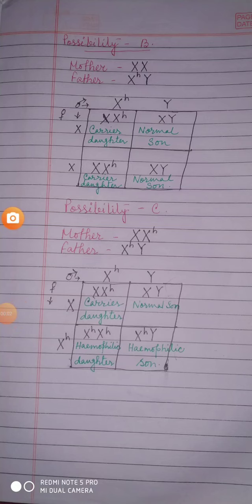In case of possibility B, a mother is having both X as normal — that means with capital H and capital H — and the father has one X with small h and one Y. So the four offspring found here are one carrier daughter, one normal son, one carrier daughter, and one normal son — that means two normal sons and two carrier daughters.